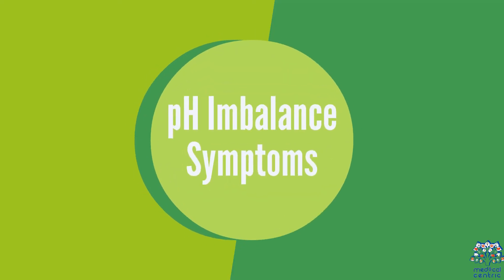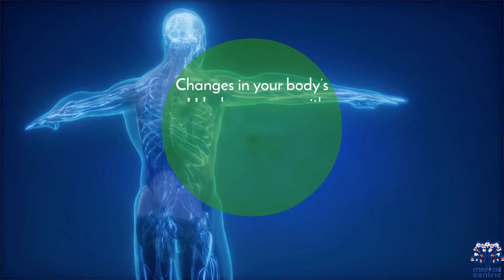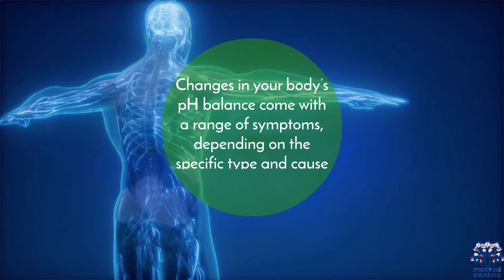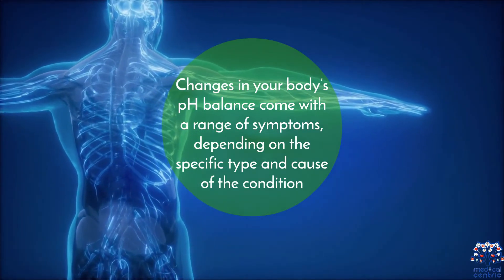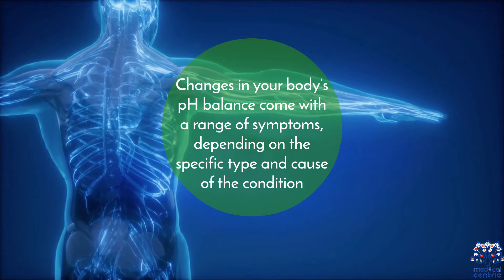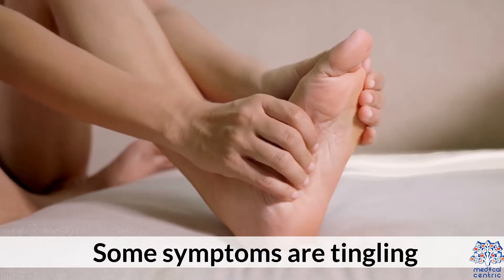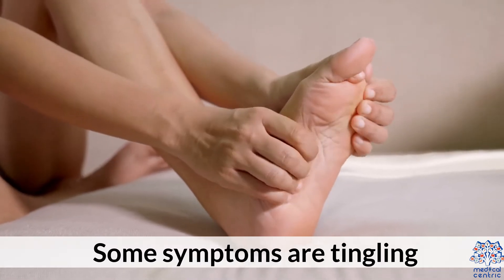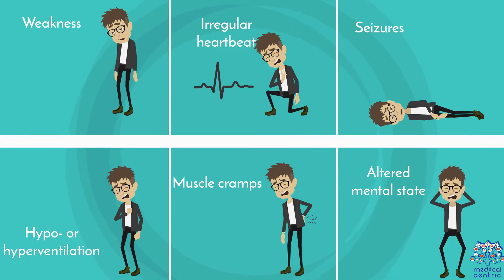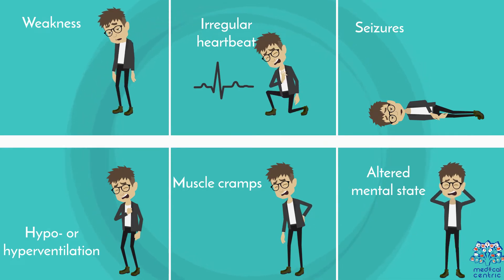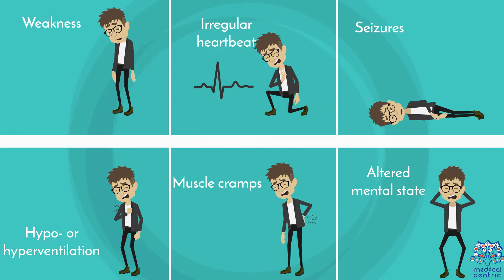pH imbalance symptoms. Changes in your body's pH balance come with a range of symptoms, depending on the specific type and cause of the condition. Some symptoms are tingling, weakness, irregular heartbeat, seizures, hypo or hyperventilation, muscle cramps, and altered mental state.